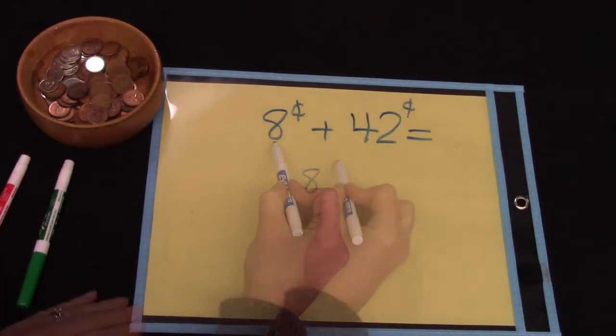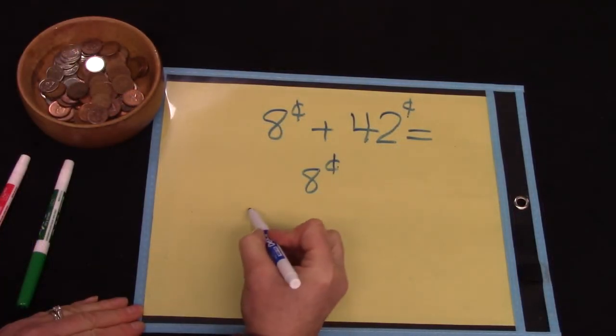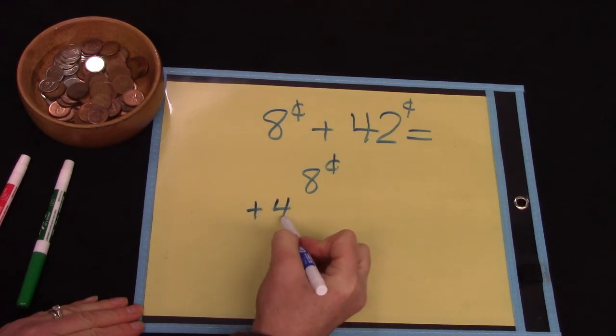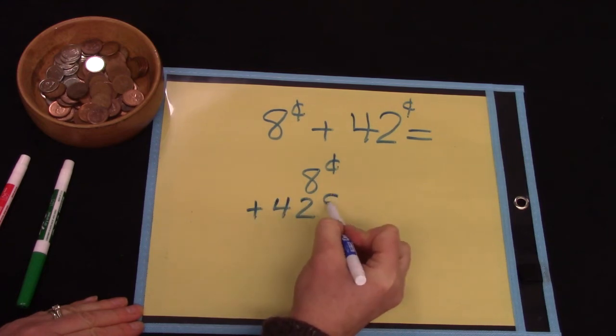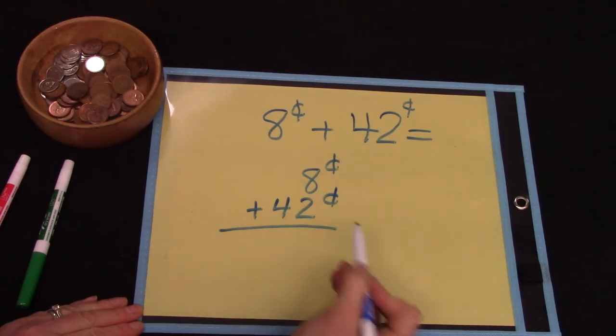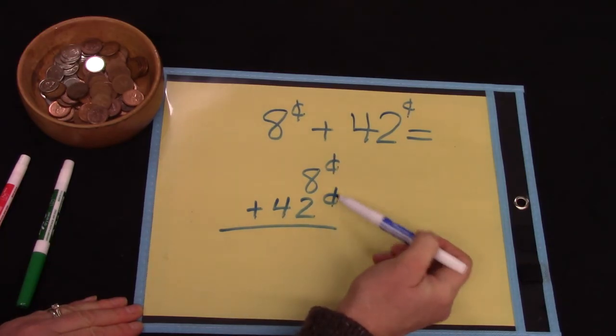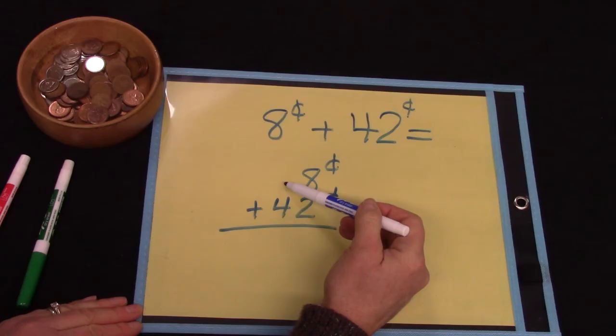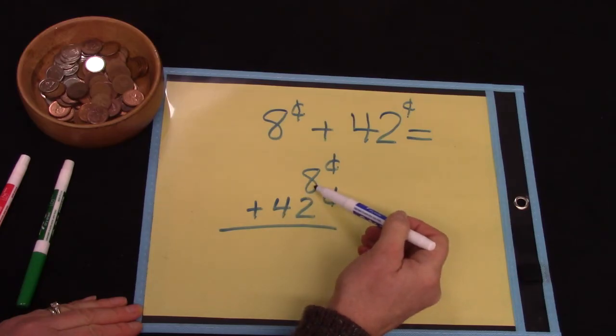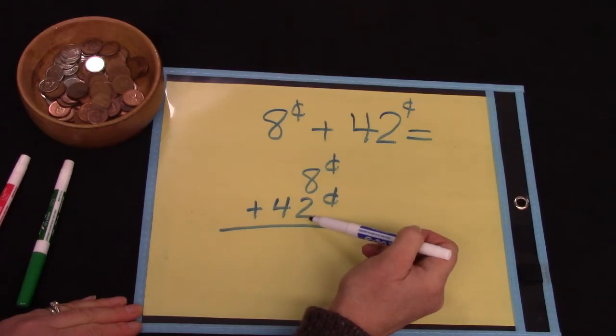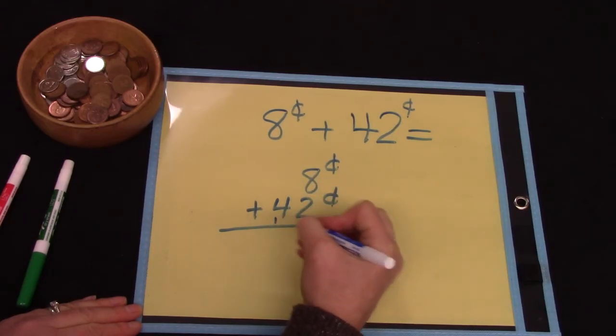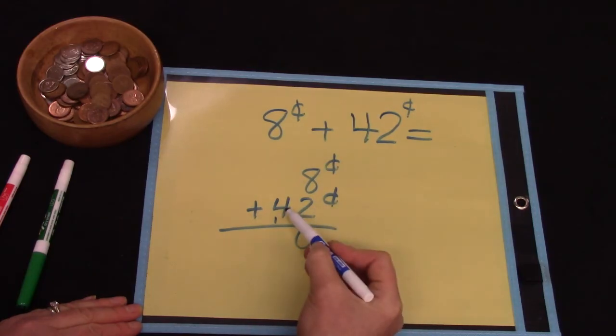In our next question we have 8 cents plus 42 cents. Did you notice how I wrote this? I didn't put the 8 over the 4 because it's not 8 groups of dimes. It's just 8 pennies. So if we have 8 plus 2 we know that's 10 and 4 plus 1 is 5.